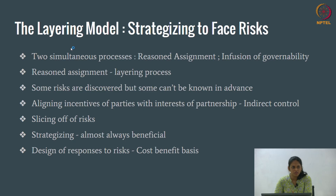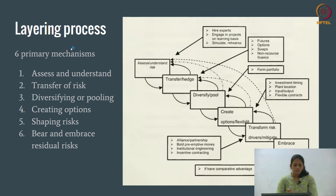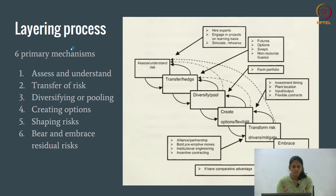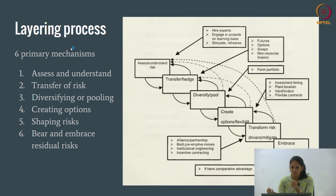The design of responses to risks is done on a cost-benefit basis. The layered process has six primary mechanisms: first, assess and understand the type of risk; second, transfer the risk; third, diversify or pool — dividing the risk so the total loss is minimized; fourth, create options to deal with the risk in multiple ways; fifth, shape the risks; and finally, embrace the residual risks.